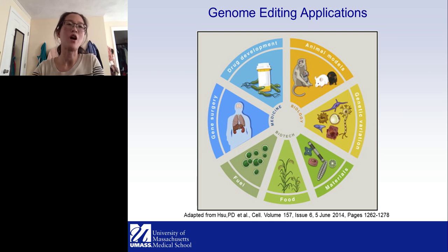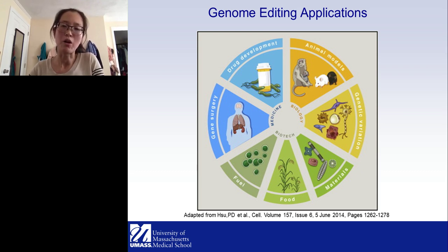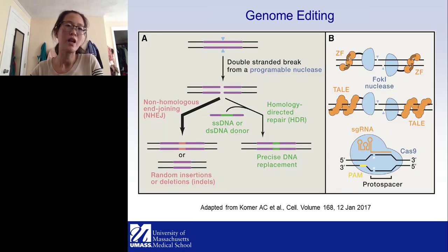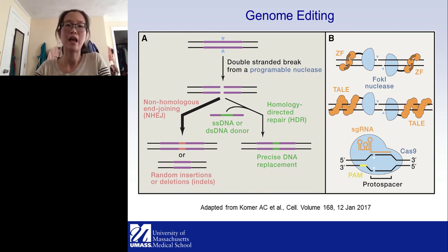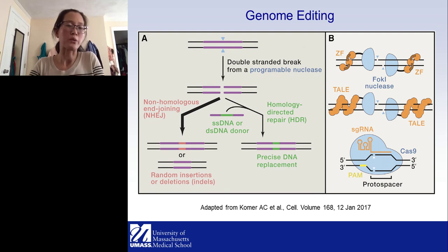The discovery of the CRISPR-Cas9 system has ignited the imagination of researchers and clinical scientists. Novel applications have been developed almost every day, ranging from basic biology to genome research and medicine. In genome editing, a target-site-specific double-stranded break is made by programmable nucleases such as zinc-finger nucleases, TALENs, and the CRISPR-Cas9 system. Once the double-stranded break is made, genome repair pathways — such as non-homologous end-joining and homology-directed repair — are mobilized.